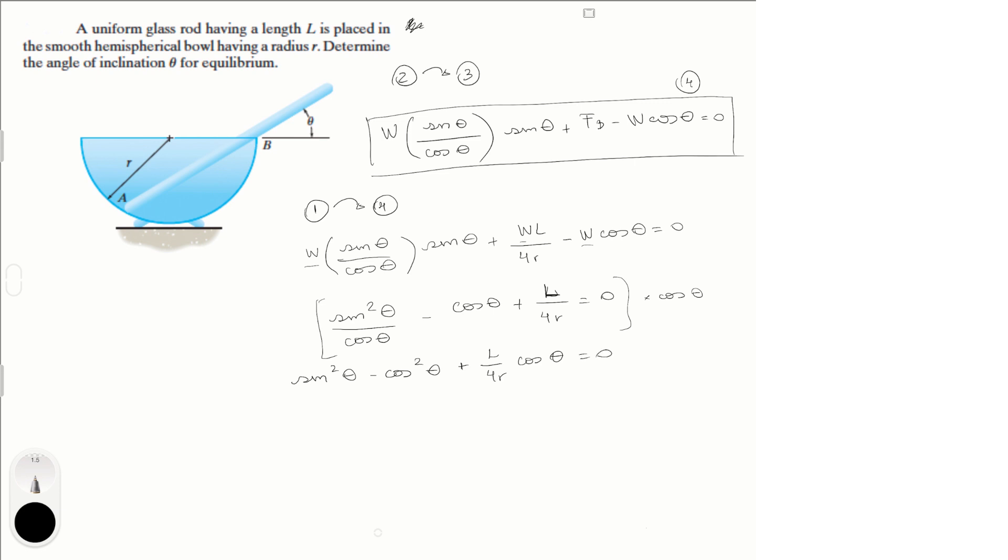So this can be replaced. This term can be replaced in trigonometry by 1 minus 2 cosine squared of theta plus the rest of the equation, which is L over 4R cosine of theta is equal to 0.